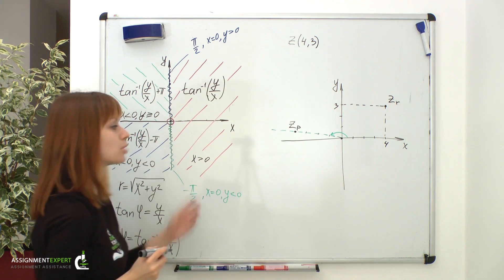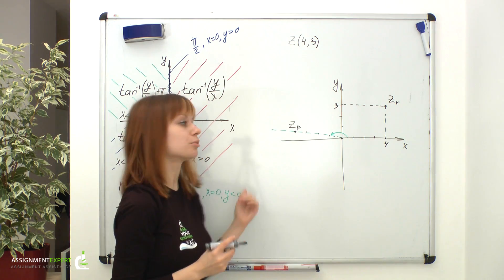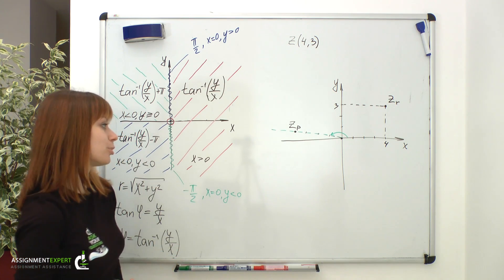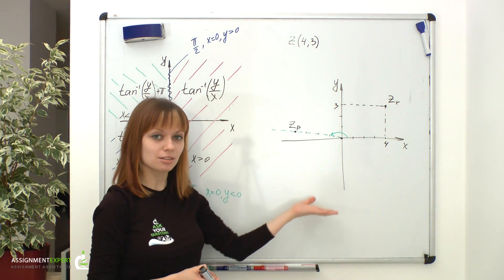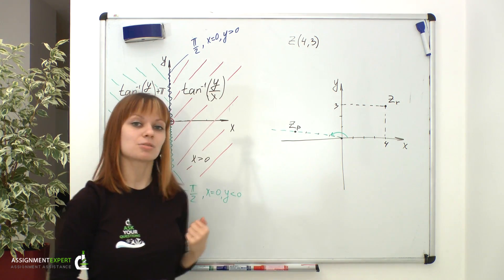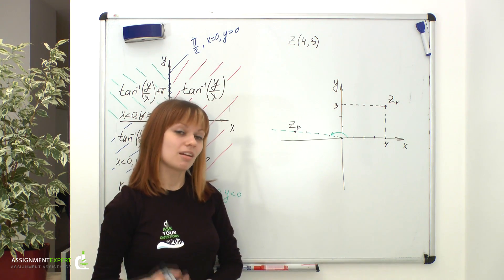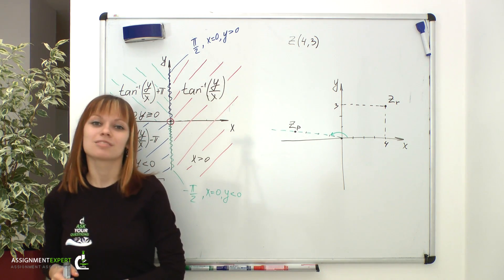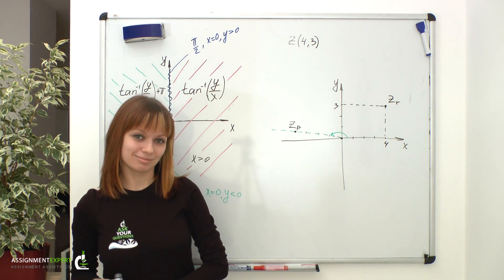So as you can see, we obtained two completely different points located in two completely different places. However, polar coordinates can be derived through rectangular coordinates and vice versa using formulas we discussed in this video. And that's pretty much all about complex numbers and geometric representation. Thank you.